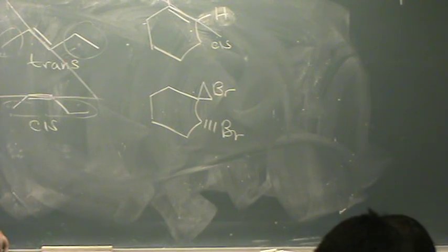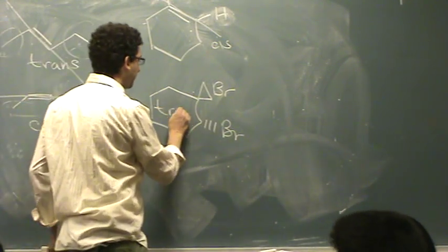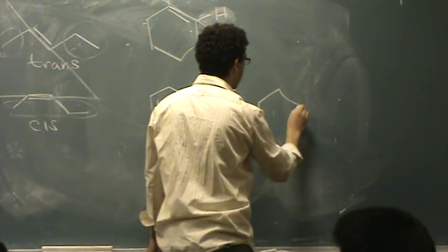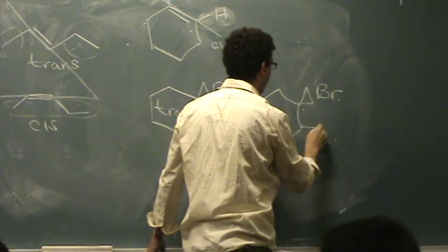Cis or trans? This is trans. You could draw the cis if you wanted to. And that would be just putting them on the same side. Either coming towards you or going away from you. It wouldn't matter.